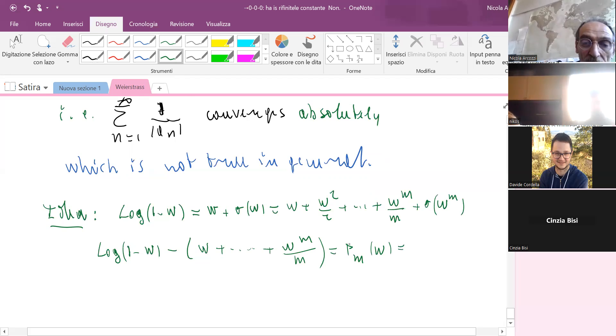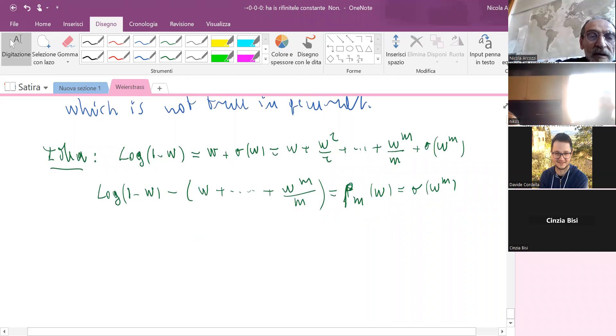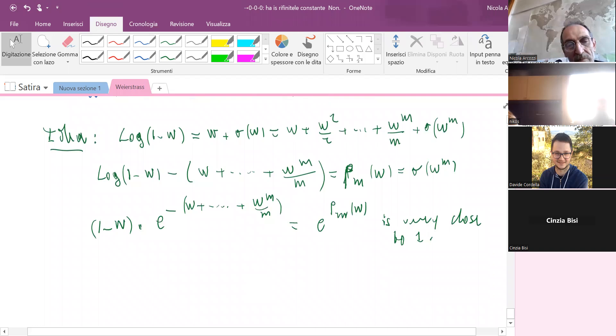That's very small as w goes to zero. And taking exponentials, it means that (1-w)·e^(-w + w^m/m) is very close to 1, because the ρ is very close to zero.